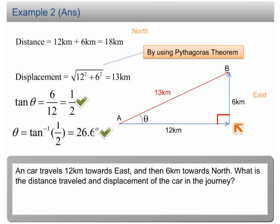This example actually shows us the difference between distance and displacement. Distance is the total path traveled by an object from one point to another, whereas displacement is the shortest length between two points in a specific direction.